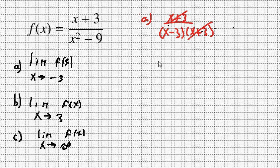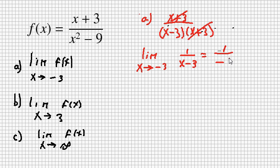I cancel out the x plus 3's from numerator and denominator. So now I want to compute the limit as x approaches negative 3 of 1 over x minus 3. If I substitute negative 3 in, this becomes 1 over negative 6. So the limit is 1 over negative 6.